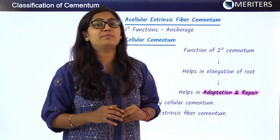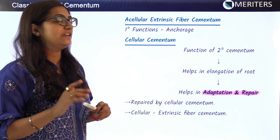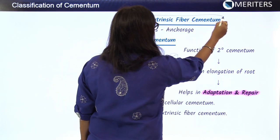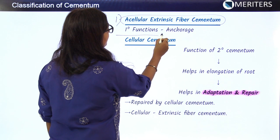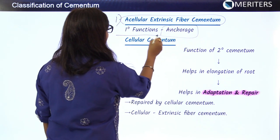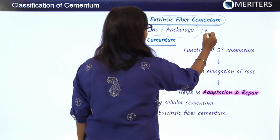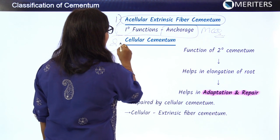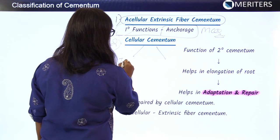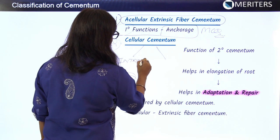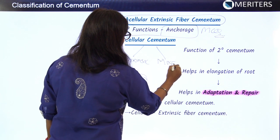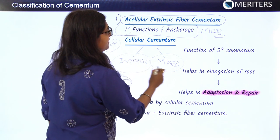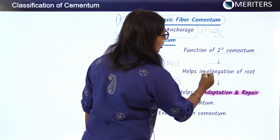Looking at the role of each type of cementum: the first type, acellular extrinsic fiber cementum, has a primary function of anchorage — important for MCQs. The second type is cellular cementum, which is divided into intrinsic and mixed.